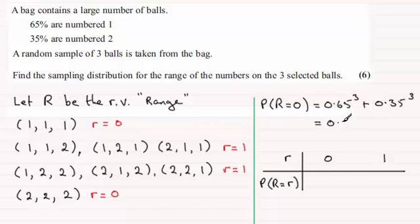So I can put that in as 0.3175, and then if I take this away from one, I get 0.6825 for the probability that the range is one.